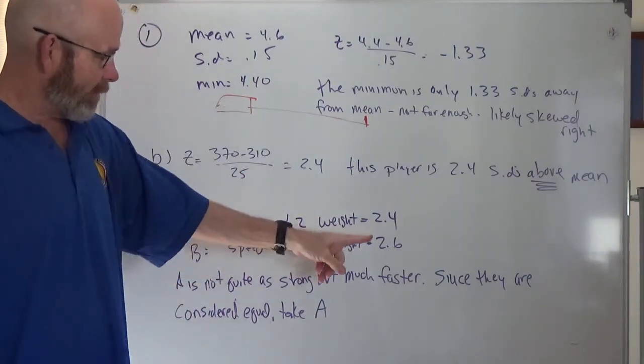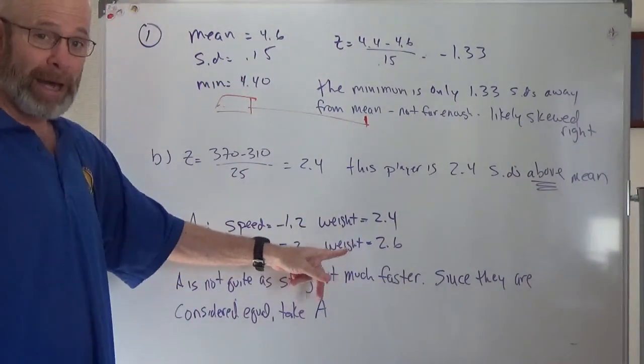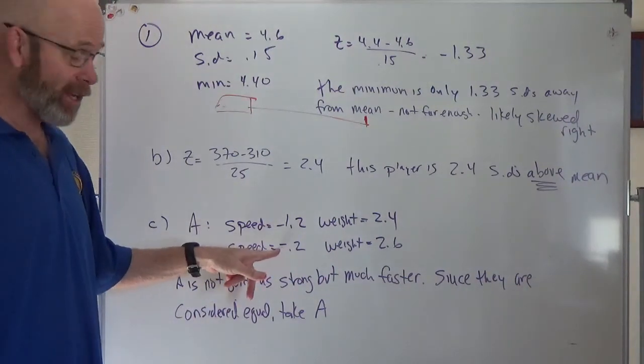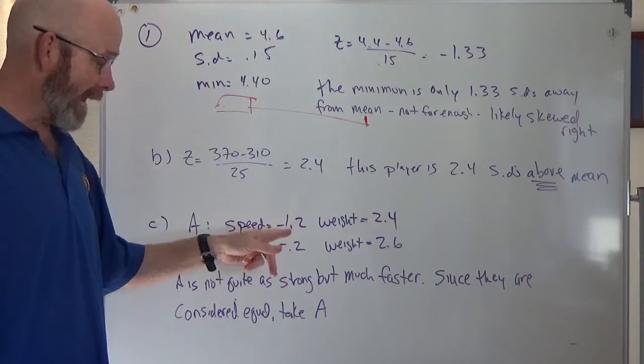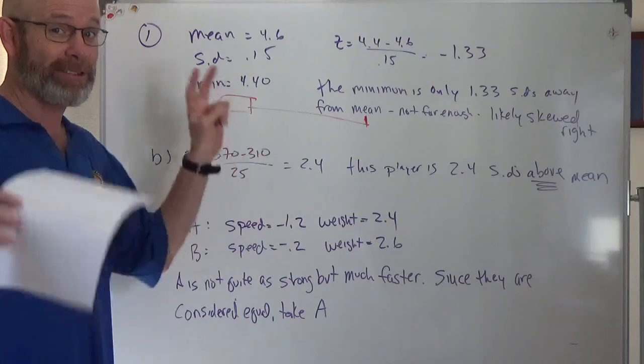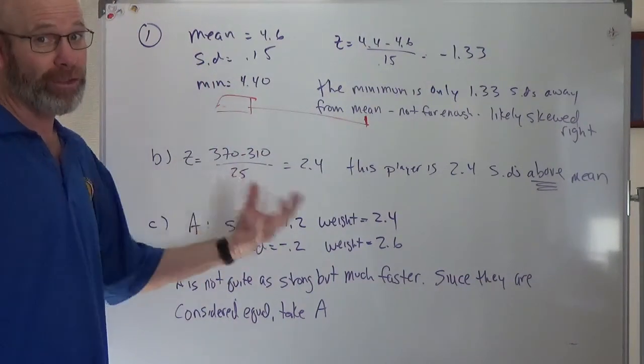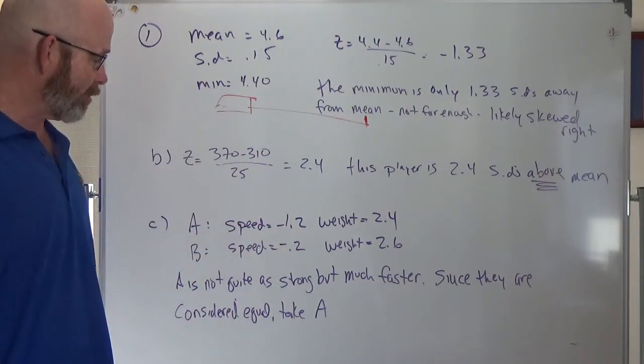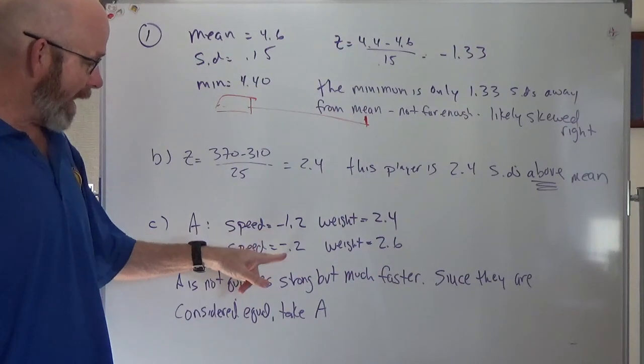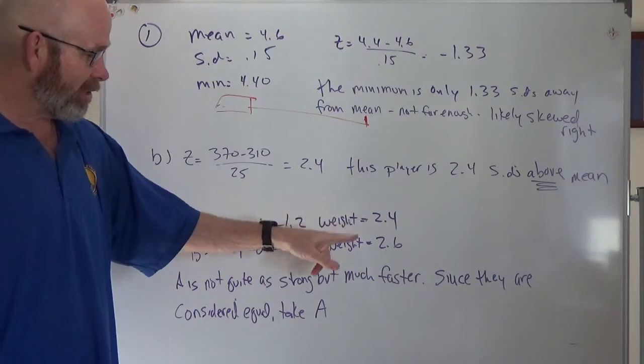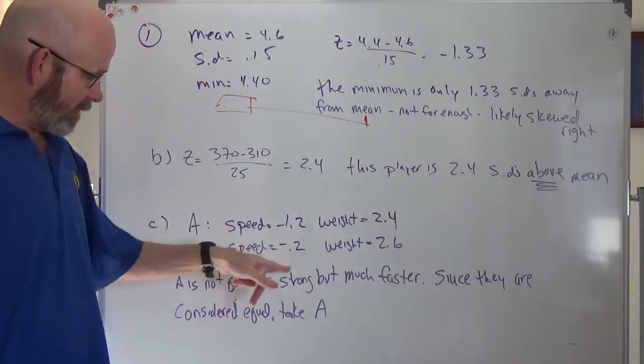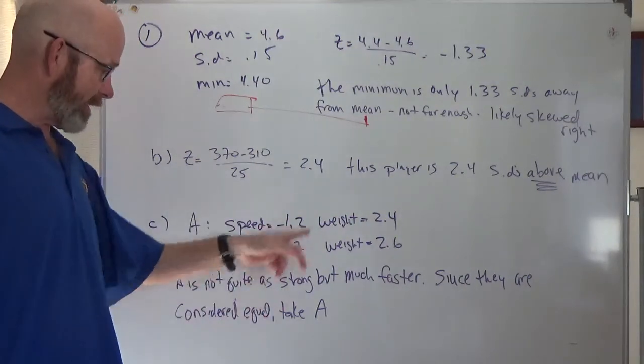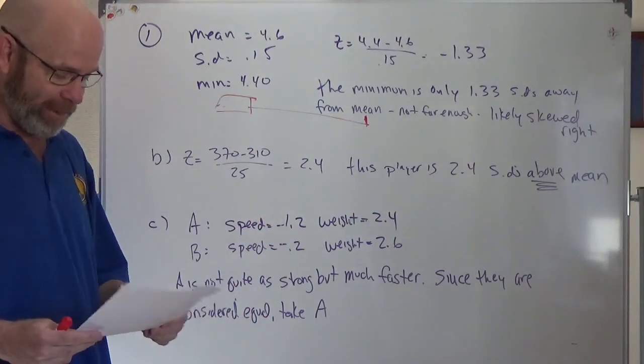So what I did was, relatively close B is a little bit better, farther apart here. Remember the negative z-score for speed means he's faster. So negative means good in this point. So sometimes that's a little tricky to remember. So this guy is way faster than this guy. Just a little bit not as strong. So since they're considered equal, this gap is bigger. So we're going to pick player number, or player person A.